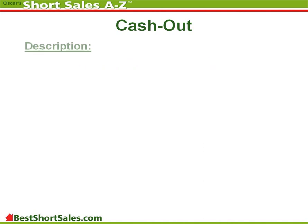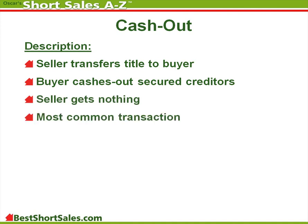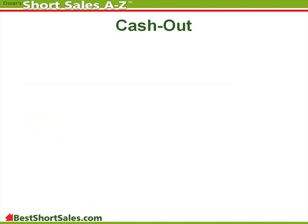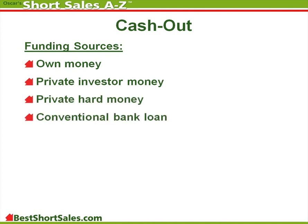Transaction Description. In a cash out, the seller transfers title to a buyer. The buyer cashes out the creditors secured by the property. In a short sale, the seller gets nothing. This is the most common of all real estate transactions. A cash out is for, at least temporarily, holding a property. The key to a cash out is the funding source. Funding comes from one's own money, private investor money, private hard money, or conventional bank loan.